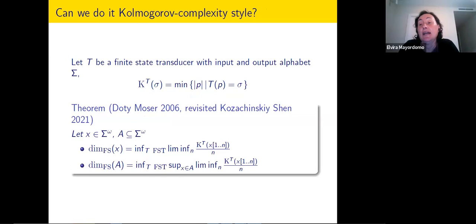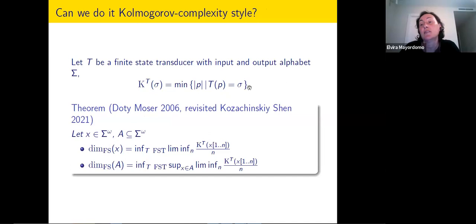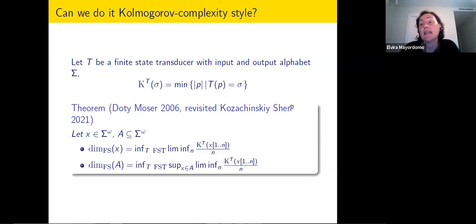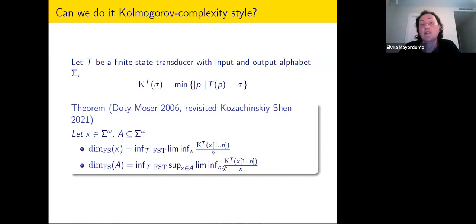Can we do it in Kolmogorov complexity style? The idea is that you take a single finite state transducer, but you can define a sort of information complexity: it is the length of the shortest string that outputs the target sequence sigma. It has been proven first by Doty and Moser, and recently revisited in automatic complexity papers by Kosachinsky and Sam, that you can also characterize finite state dimension using this Kolmogorov-like decompression style. But you always have to take the infimum over all automata of the compression ratio in Kolmogorov complexity sense, because there is no universal automaton.